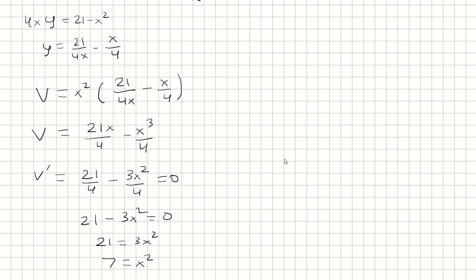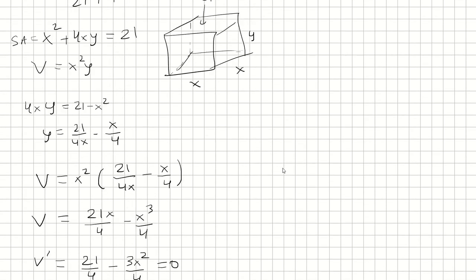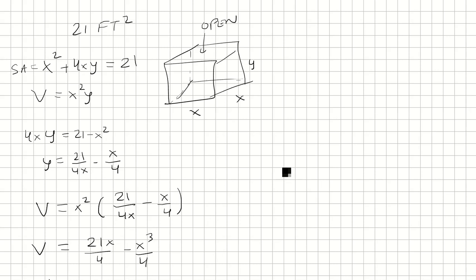So then we go up here, so we said x is square root of 7, we need to solve for y. So we plug it in here, so y is equal to 21 over 4 times square root of 7, minus square root of 7 over 4. So next, multiply the second fraction by square root of 7.